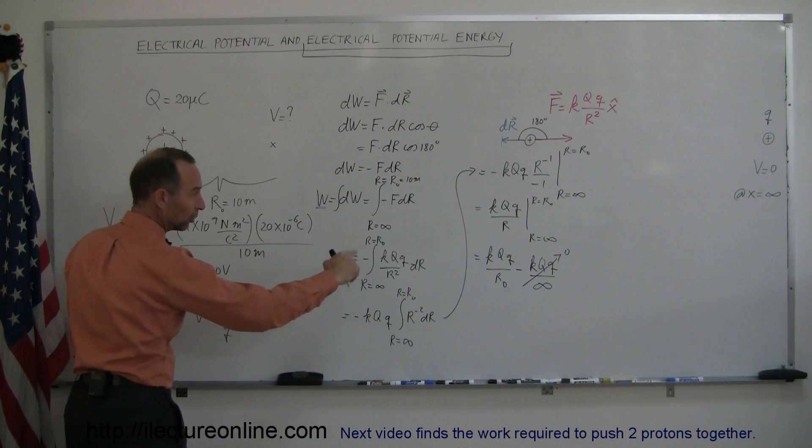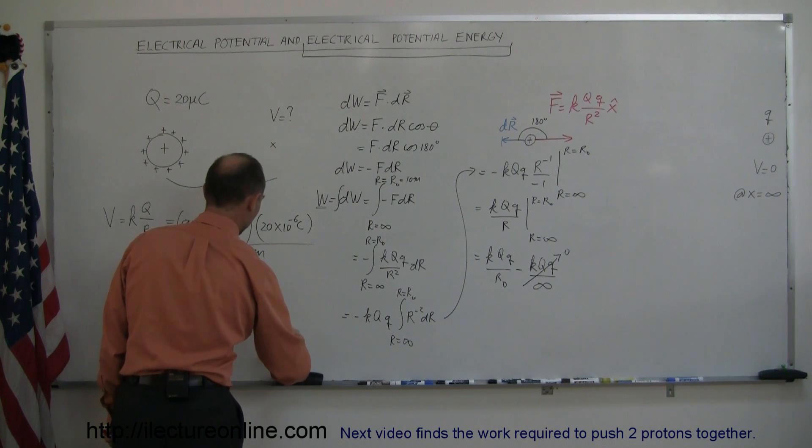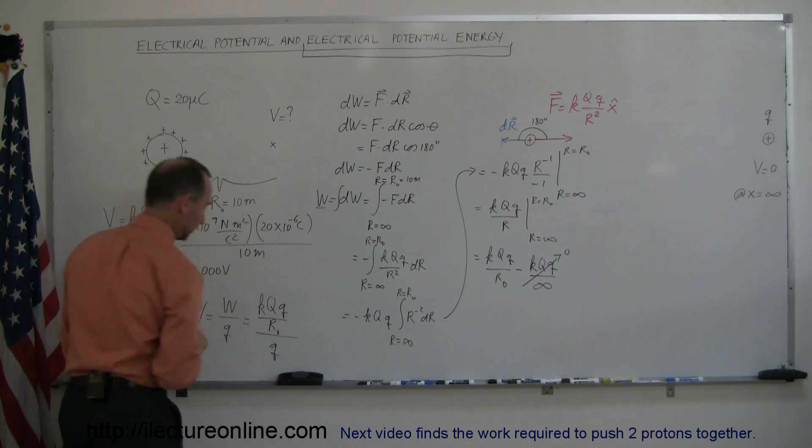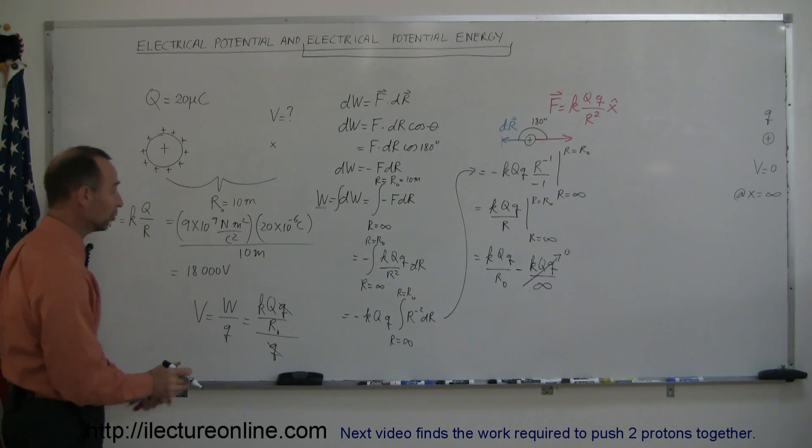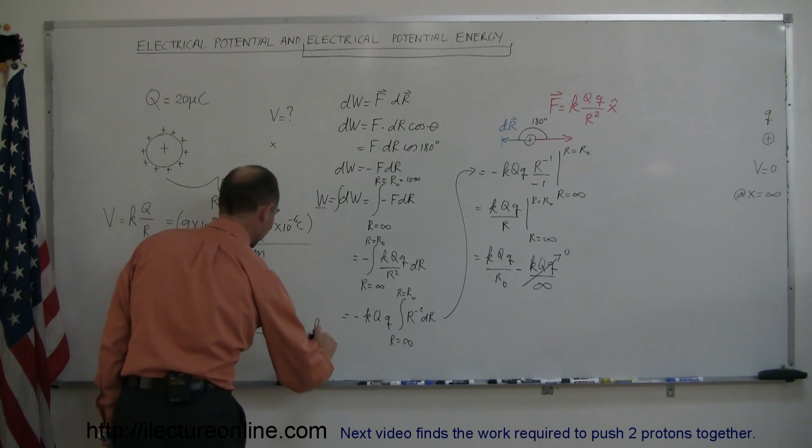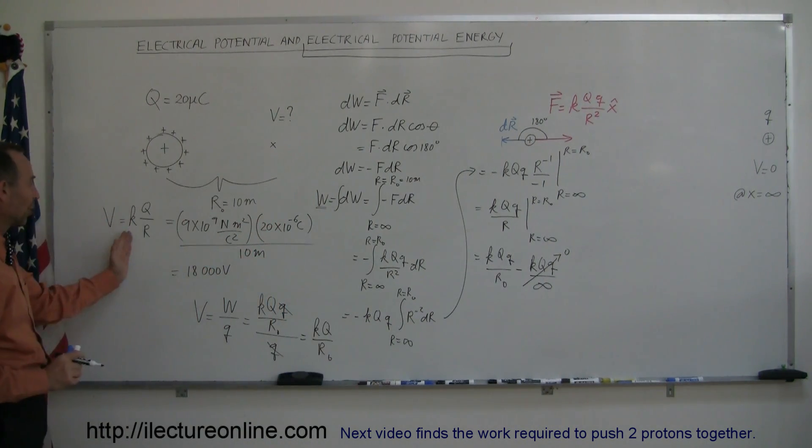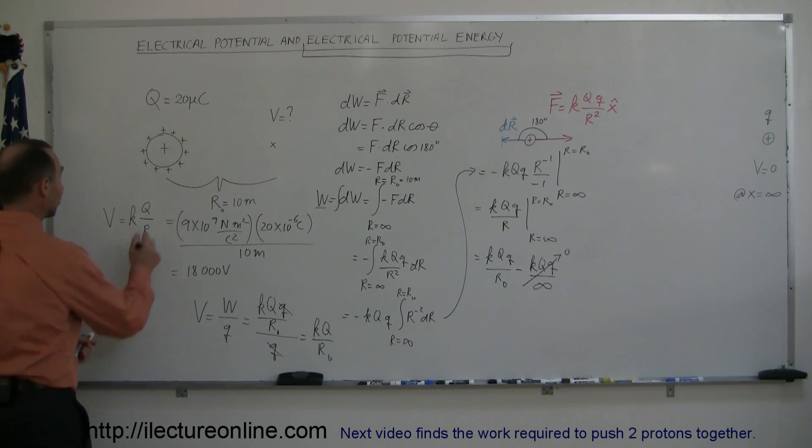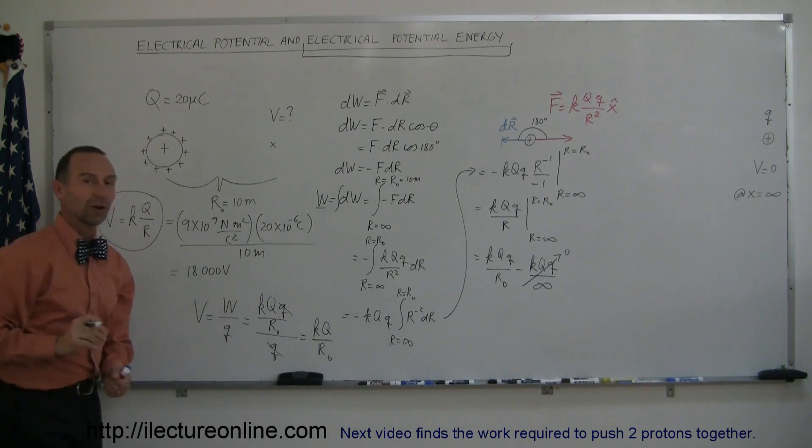The work is going to be equal to k, big q little q over r sub-naught. r sub-naught is the location right here. And we divide the whole thing by little q, you can then see that the little q's cancel out. So it doesn't matter what size charge you use, it will always cancel out. Therefore the potential is equal to k q over r sub-naught. And look, that looks exactly like the equation we have over here. This is just any r. In this particular case, we're looking for r being equal to 10 meters. That justifies us using this equation to find the potential of that location near the presence of a charged object.